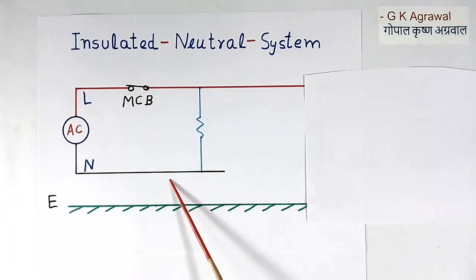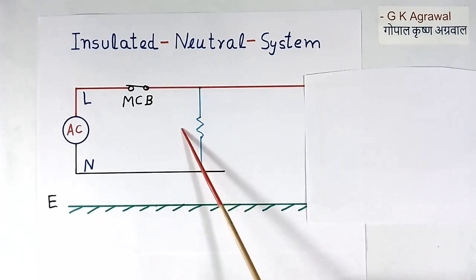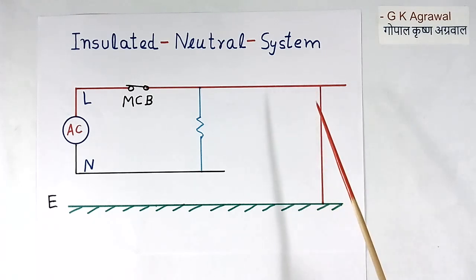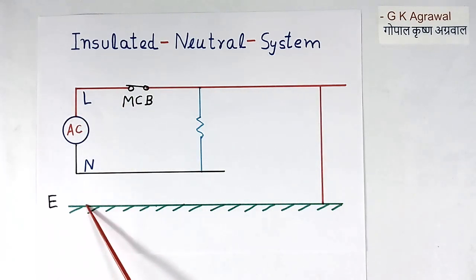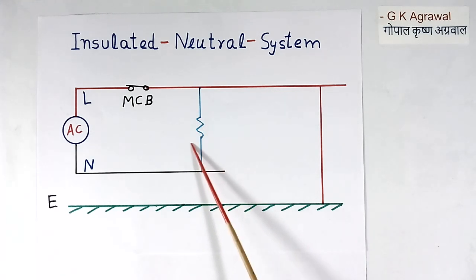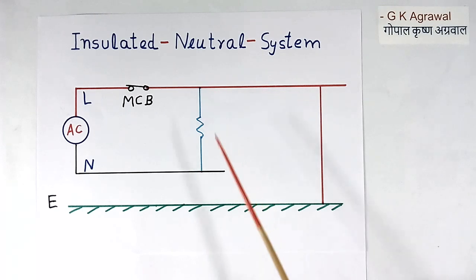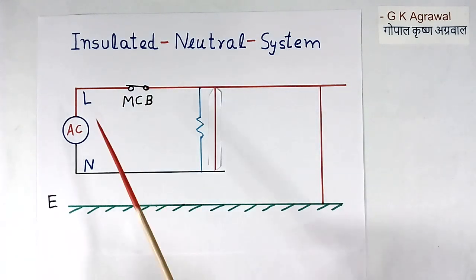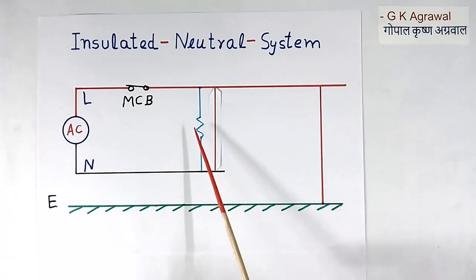The insulated neutral system is shown here again. There is no fault, so we are getting AC supply and the equipment is working. Now suppose there is a fault between line and earth. In this case also, as current cannot flow — it is open — AC supply will remain there. The MCB will not trip and this equipment will continue to work. Note: this is a fault between line and earth, not between line and neutral. If the fault is between line and neutral, then short circuit current will flow and the MCB will trip, and the equipment will not work.